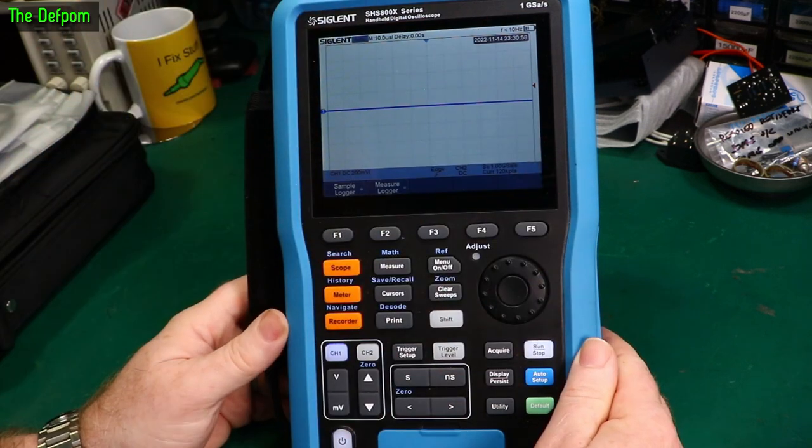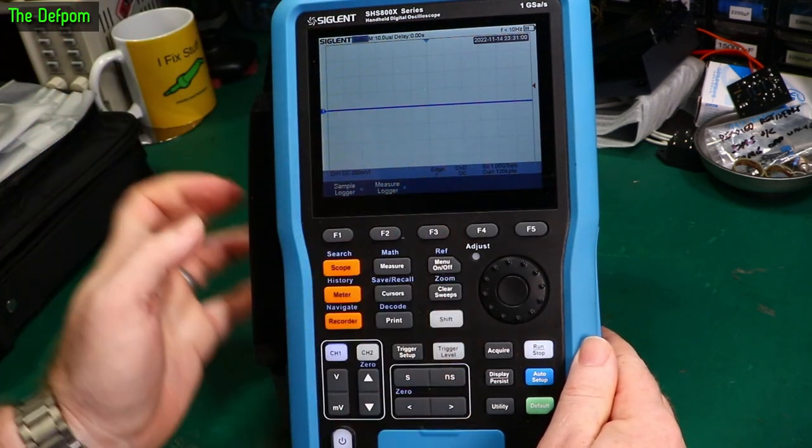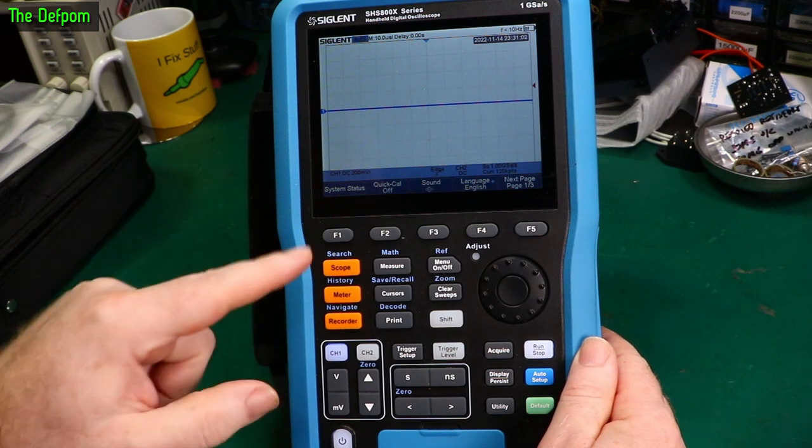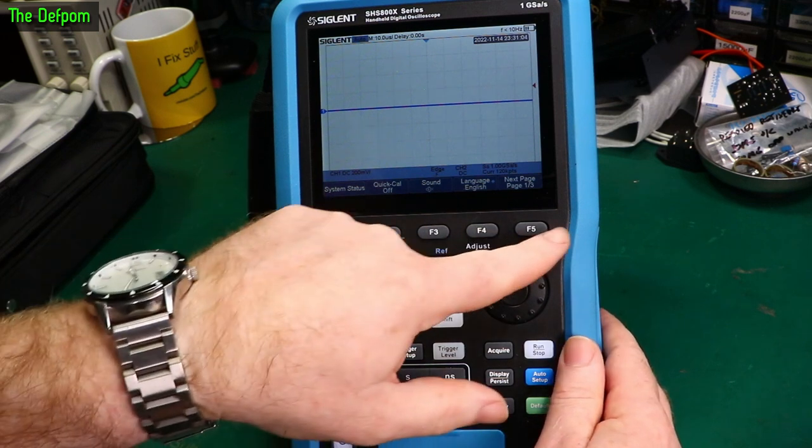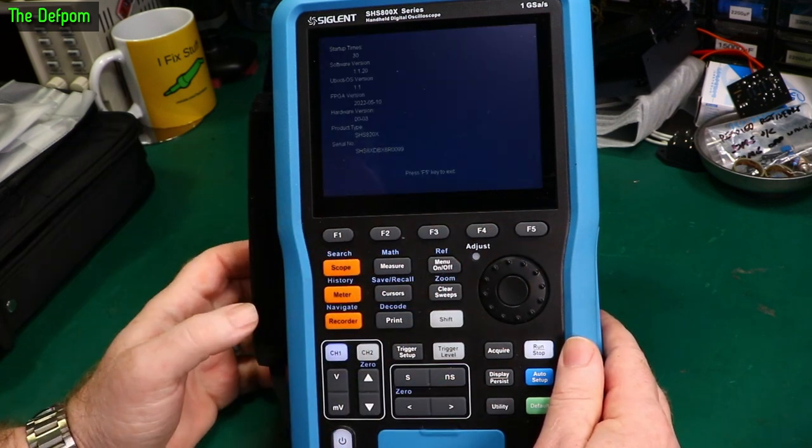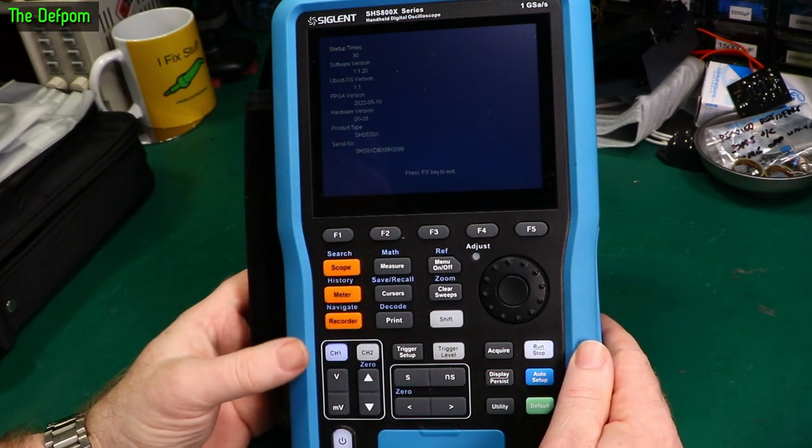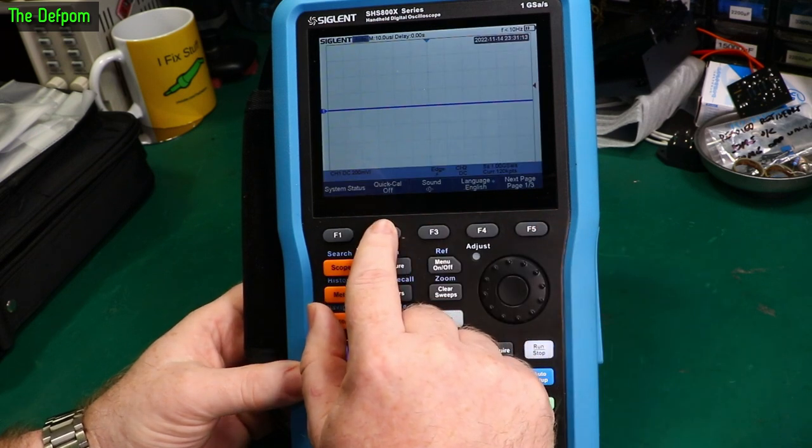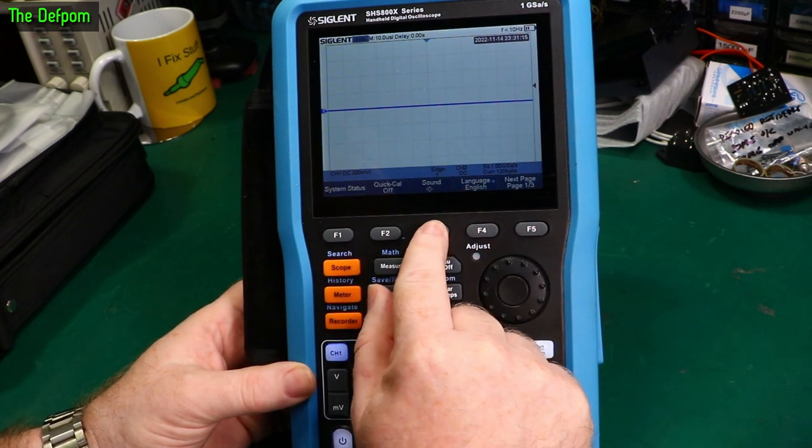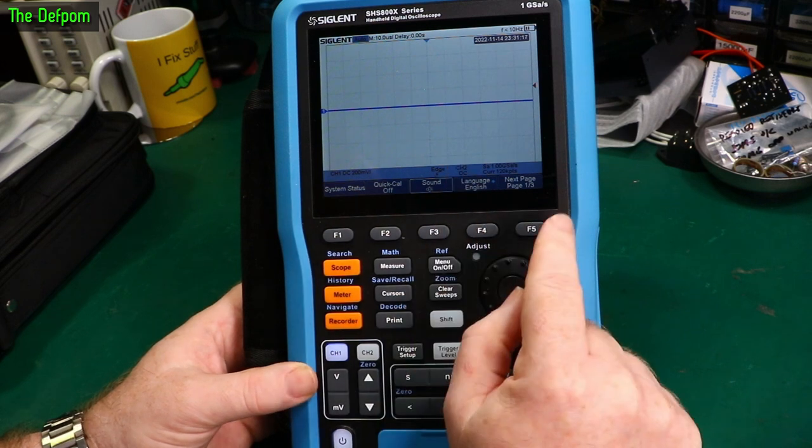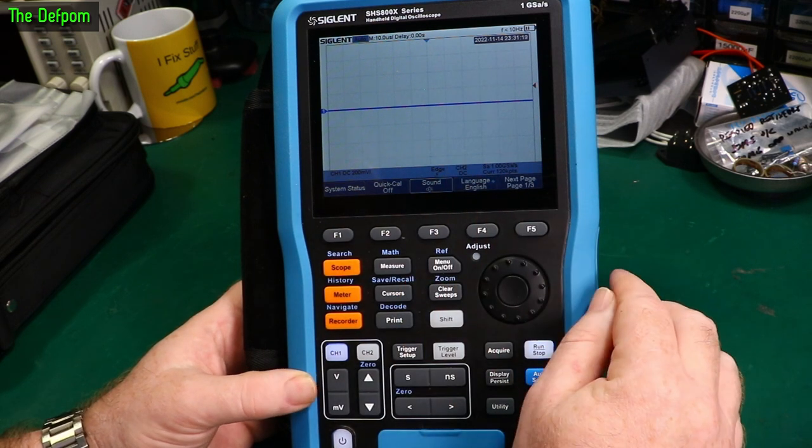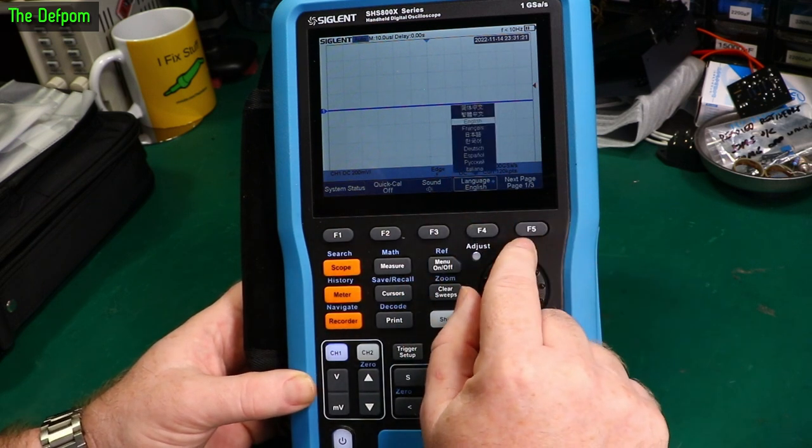So screen looks as you expect. It's an oscilloscope screen. So obviously scope meter functions. System's other. So just look at the F buttons along here. So system information. It looks no different to any other Siglent oscilloscope. F5 to exit. Quick count, will do that. Sound is currently turned off. I am going to turn it on because I like sound. I like button confirmations. Language options. A bunch of them in there.